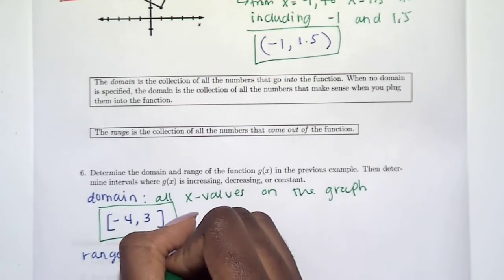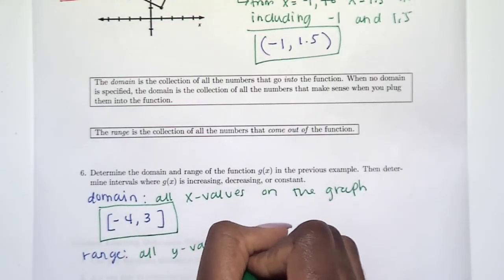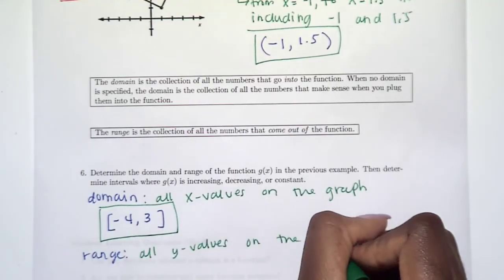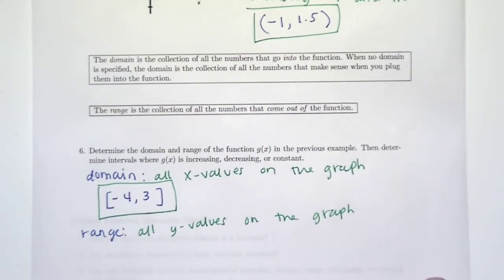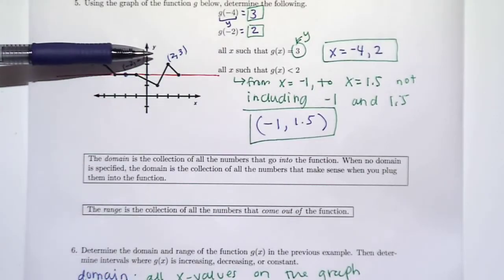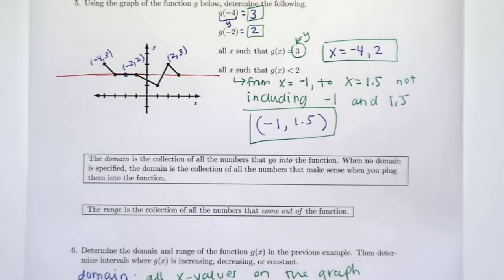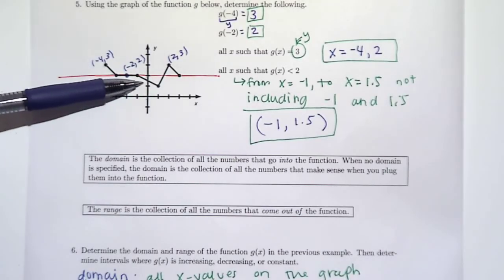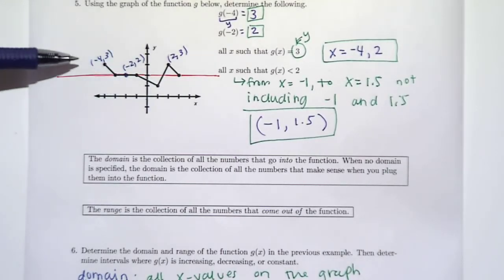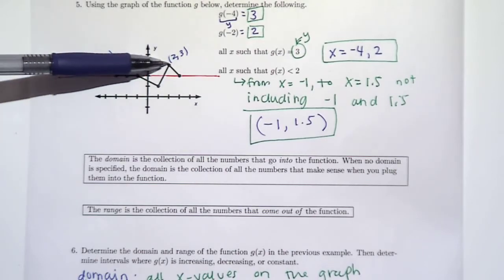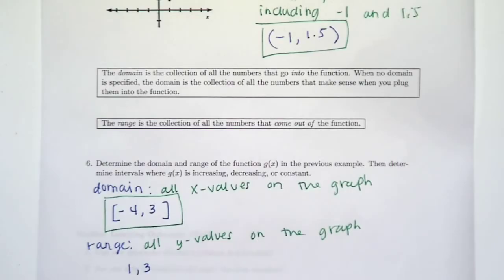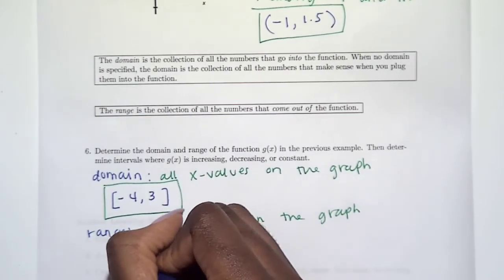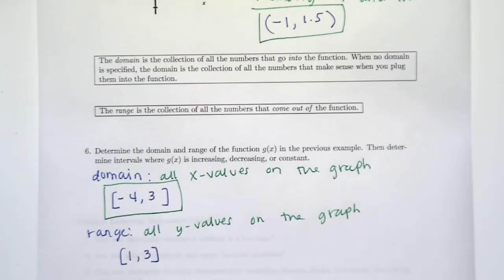The domain of our function on this graph is from negative four to three. Now for the range — those are all the y-values on the graph. The smallest y-value looks like one, and the biggest is three. So we're going from one to three, and we're including both endpoints. So we've found the domain and range.